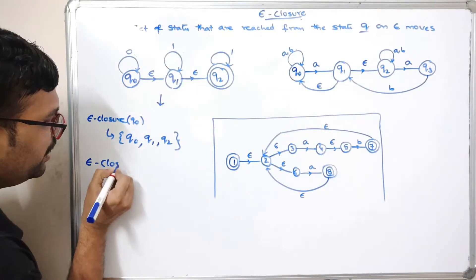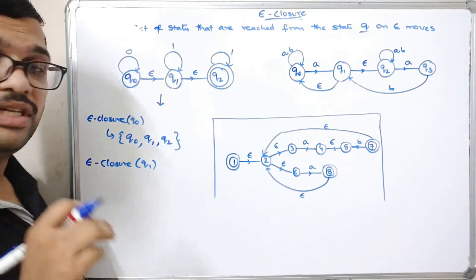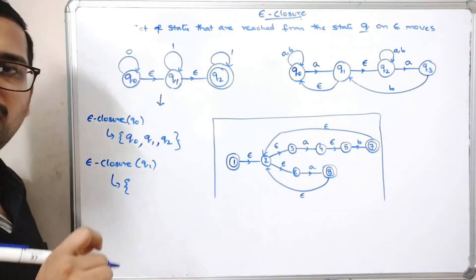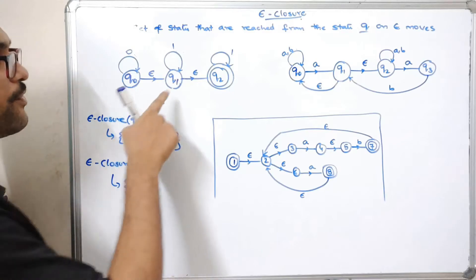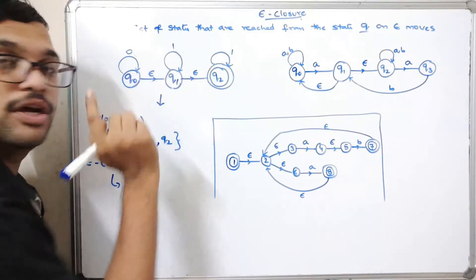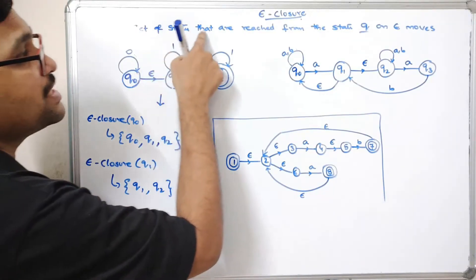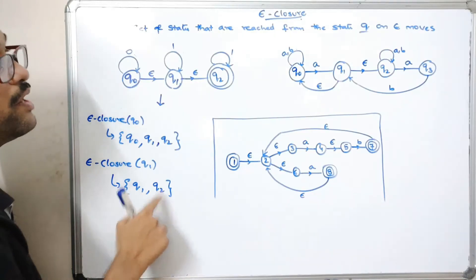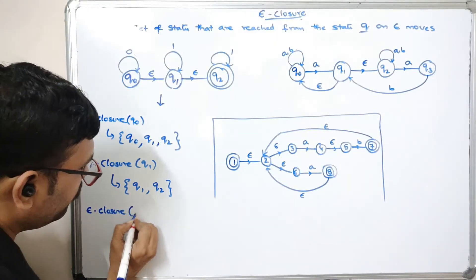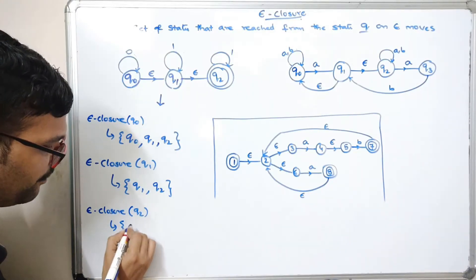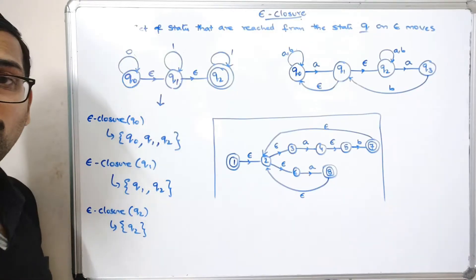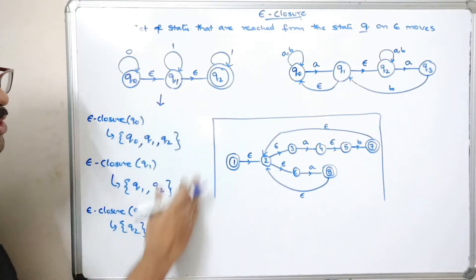Now epsilon closure of q1: q1 has the self-transition on epsilon, so q1 is included. From q1 you can see there is an epsilon move to q2, so the epsilon closure of q1 is {q1, q2}. For epsilon closure of q2: q2 has the self-transition, and from q2 there are no further epsilon transitions, so the epsilon closure of q2 is just {q2}.